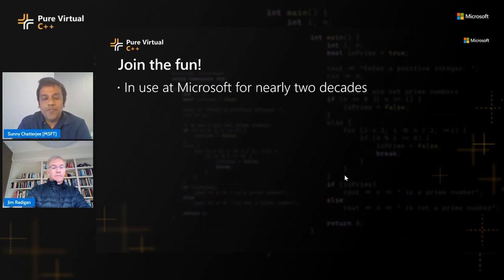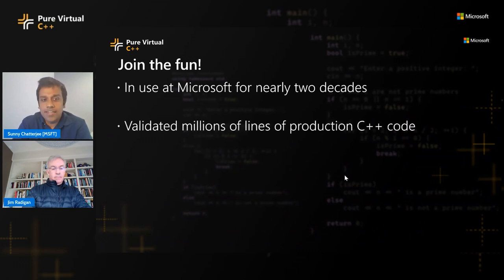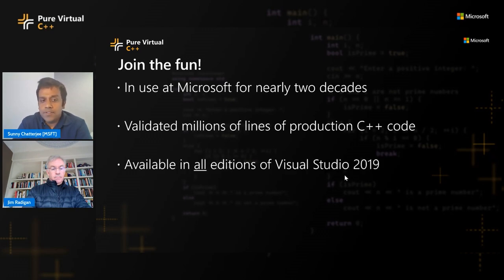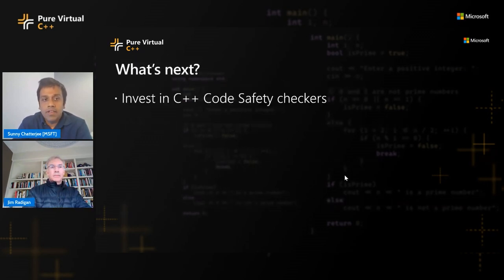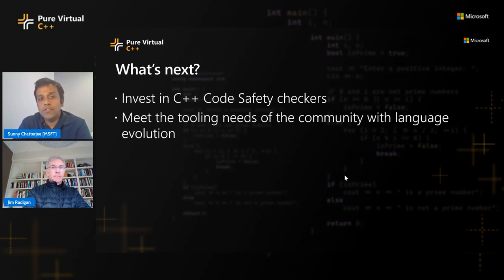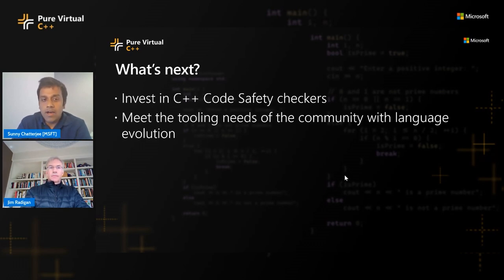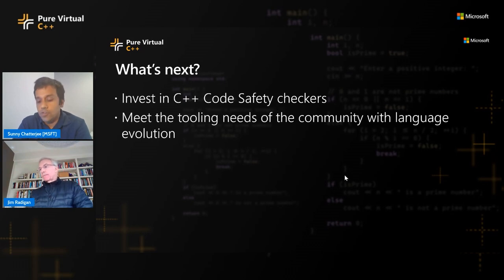My key message today: we have been using static analysis at Microsoft for nearly two decades, validating millions of lines of production C++ code. It's available in all editions of Visual Studio — it finds bugs, it's free, so you should use it. What's next for the static analysis team? We want to invest in C++ code safety checkers and meet tooling needs as the language evolves. For C++20, for example, std::span and coroutines were interesting additions — coroutines introduce new kinds of lifetime problems. As the language evolves there are new ways to make mistakes, and static analysis tools must constantly evolve to catch new kinds of defects.